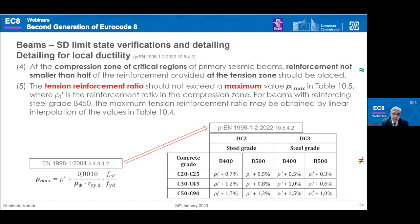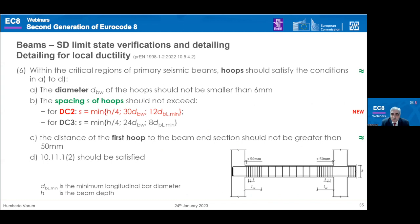For the maximum tension reinforcement ratio, a new table derived from parametric analysis is presented, well aligned with results from the actual Eurocode 8 expression. Using this table, the designer can determine the maximum reinforcement in beams as a function of steel and concrete grade and the ductility class considered. The concern on balanced distribution of steel in beam sections is retained. Regarding spacing of hoops in critical regions of beams, the rules for DC3 are aligned with DCM, and new rules are introduced for DC2.